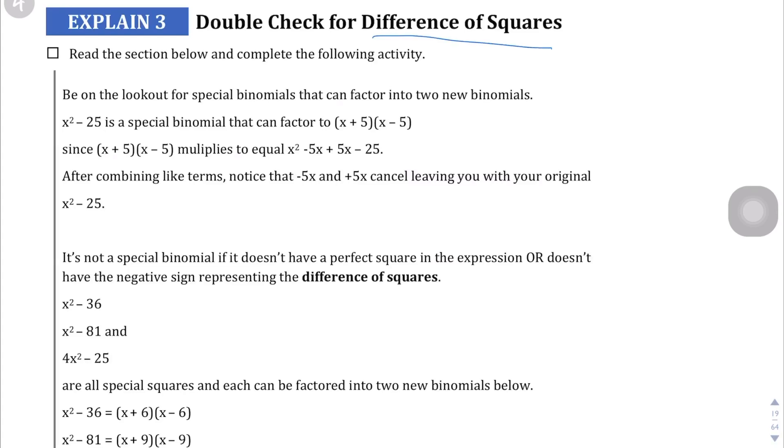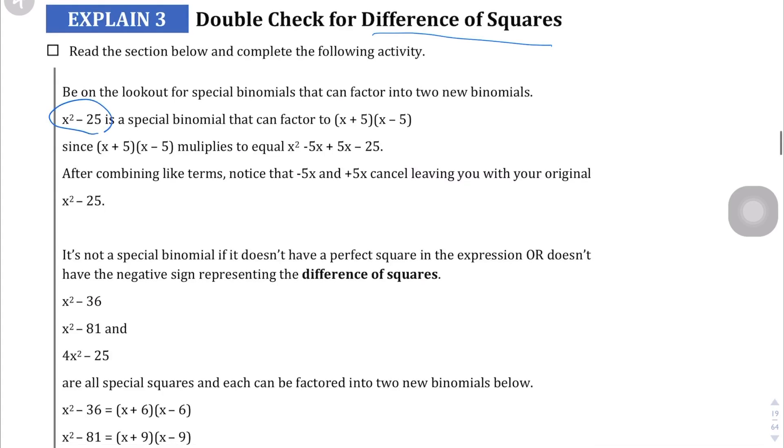The difference of squares is when you have a binomial like x² - 25, particularly one in this format where both the first term and the second term are both what we call perfect squares and they fall into a pattern that's actually kind of nice when it comes to factoring.